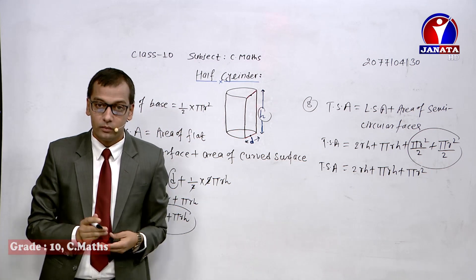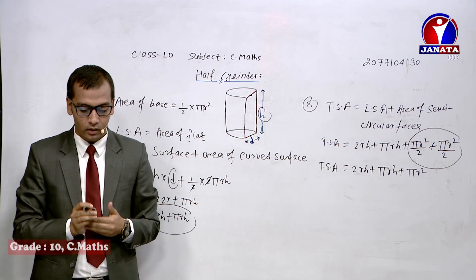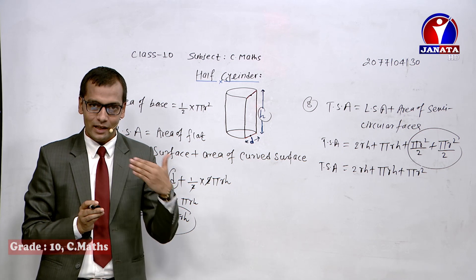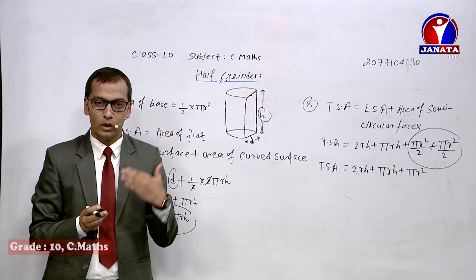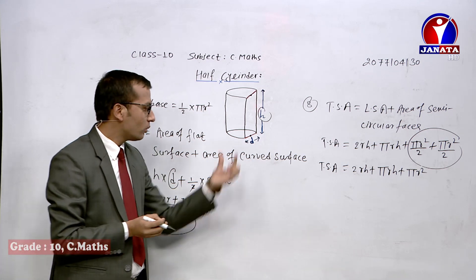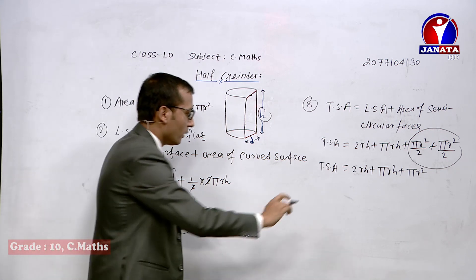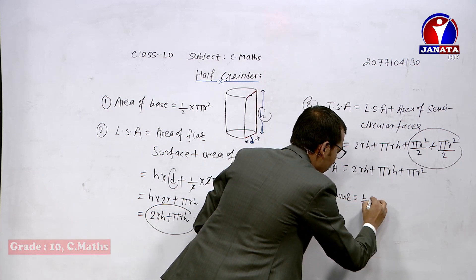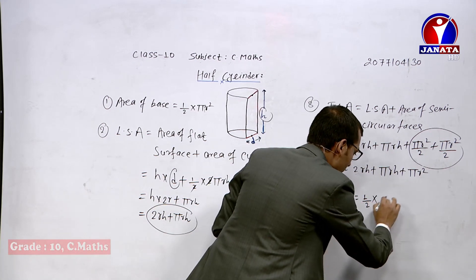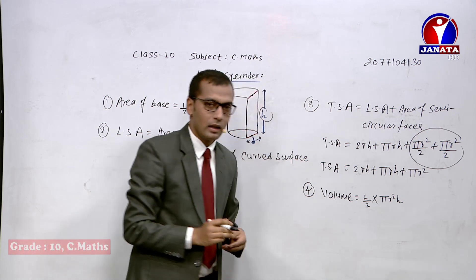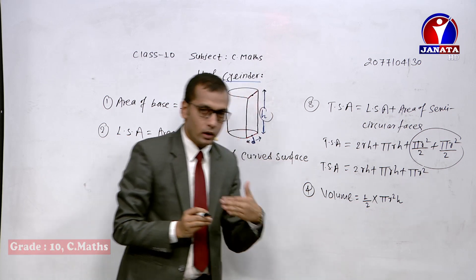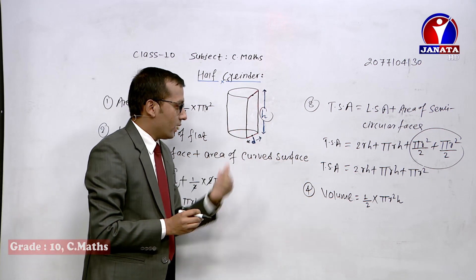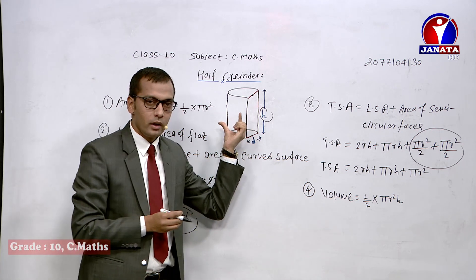Next is volume. The volume of a half cylinder is simply one half of the volume of a full cylinder. Since the volume of a cylinder is πr²h, the volume of a half cylinder is πr²h/2. Now let's take one practice question related to the semi-cylinder.